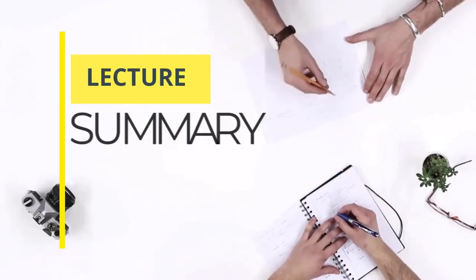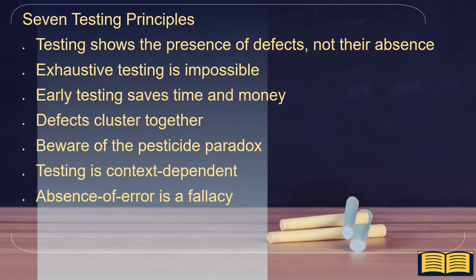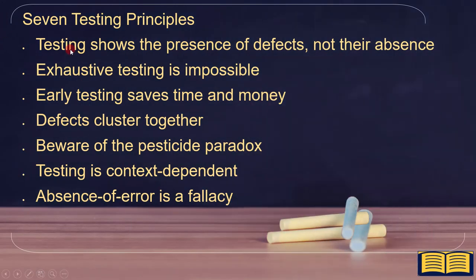Let's summarize all the points. The seven testing principles are: testing shows the presence of defects, not their absence; exhaustive testing is impossible; early testing saves time and money; defects cluster together; beware of the pesticide paradox; testing is context-dependent; and absence of errors is a fallacy.